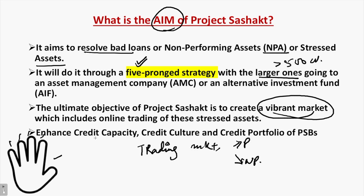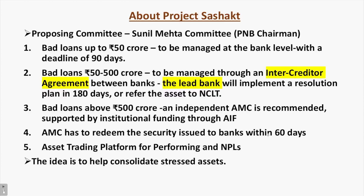The purpose is to enhance three things: the credit capacity of banks and financial institutions, and to improve the credit culture as well as the credit portfolio of public sector banks. These are the three things which it wants to improve or enhance. Some provisions of Project Sashakt will help you understand what exactly is the primary purpose of this project and how it is going to carry out implementation so that non-performing assets or loans can be reduced in the economy.